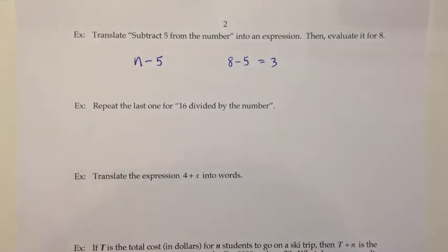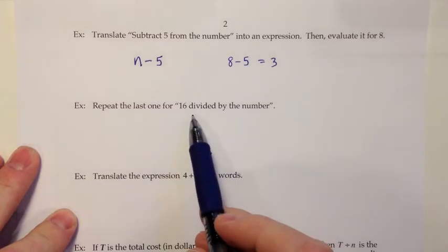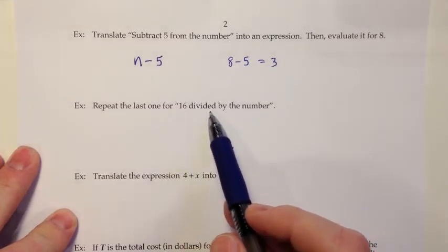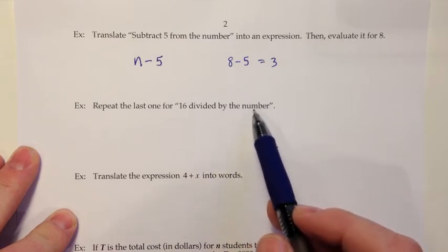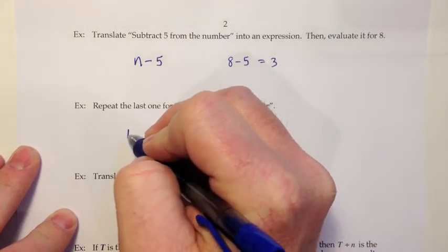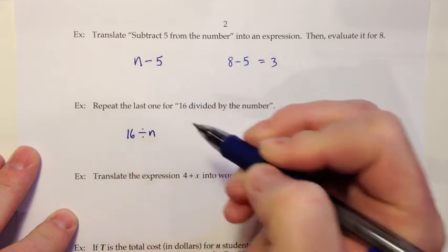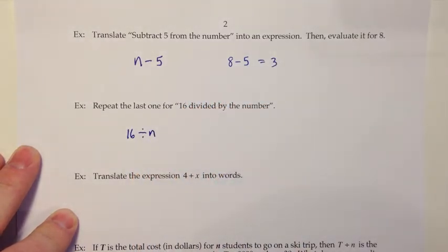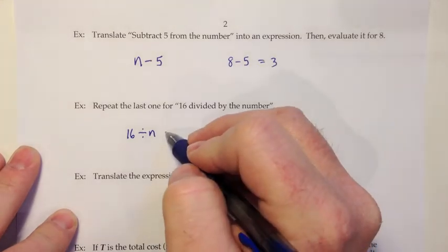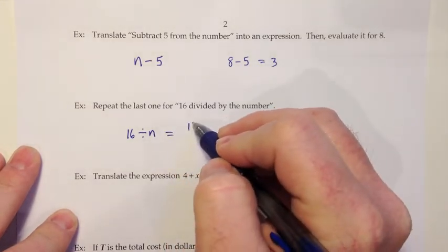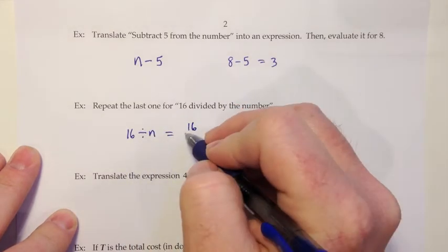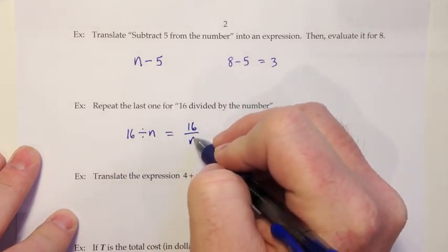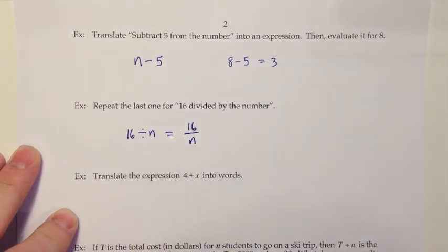Let's try that again for the expression or the phrase 16 divided by the number. That switch we got a moment ago with subtraction does not happen here with the division. 16 is there first, and then that is divided by this number, which I'll use n again for. One thing I could write is 16 divided by n with the division symbol. Another more common way to handle that in an algebra class would be to do it as a fraction. The numerator has the first number, and then our divisor goes in the denominator, and we'd write 16 over n.